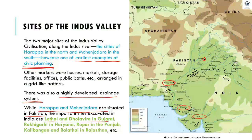Lothal is very close to the Sabarmati River. Then we have Rakhigarhi in Haryana, and Ropar, which is very close to Chandigarh. Then we have Kalibangan and Balathal in Rajasthan. They can ask questions about on which riverbank is Harappa or Indus and so on. The northernmost site is Shortugai, Alamgirpur is the most eastward, and Sutkagendor is the most westward. These are the kinds of questions asked in objective type papers.